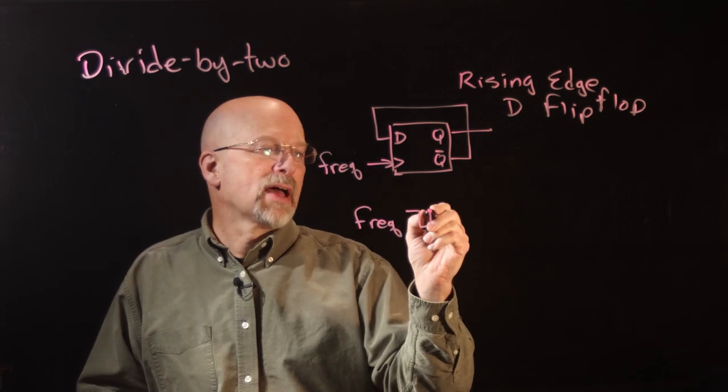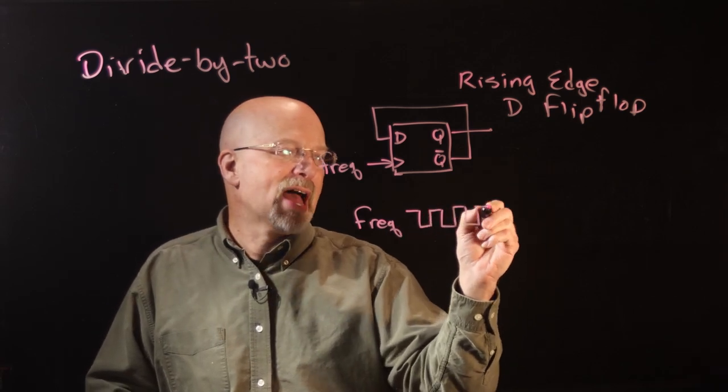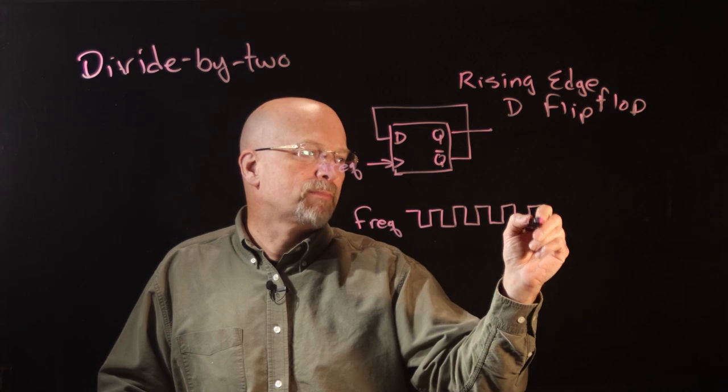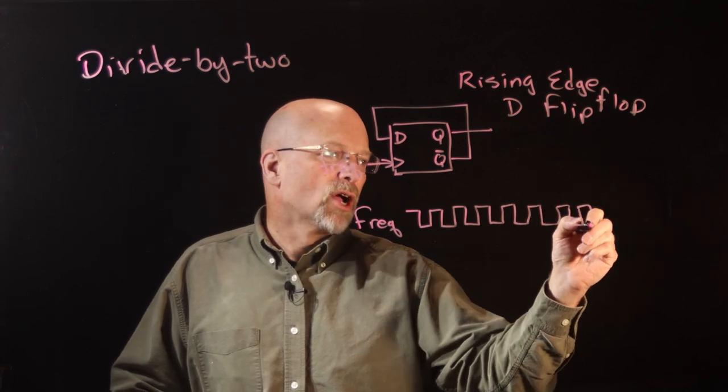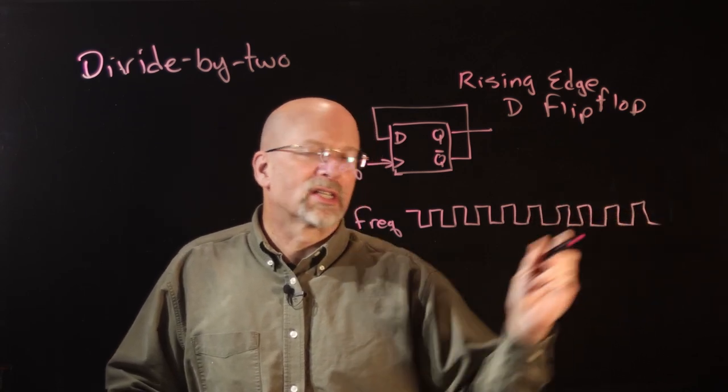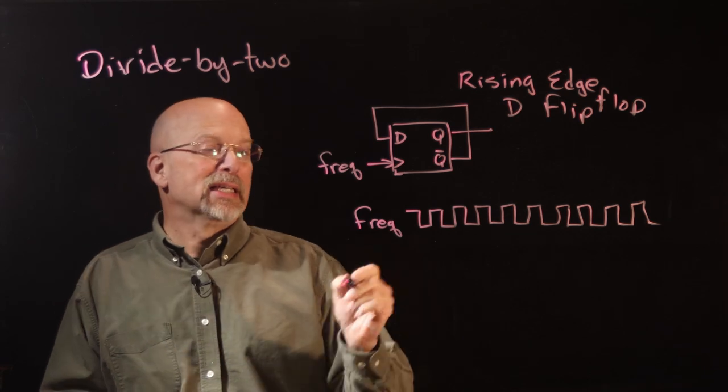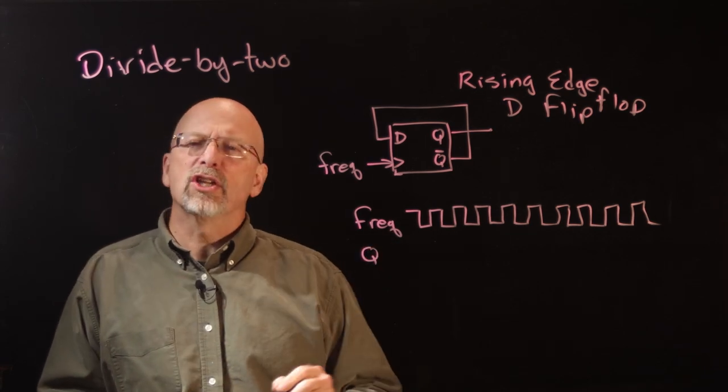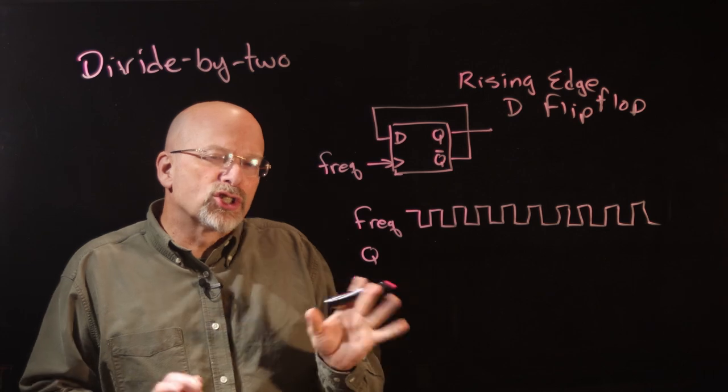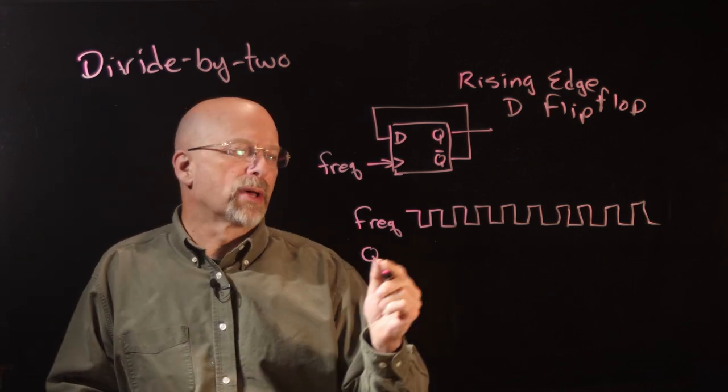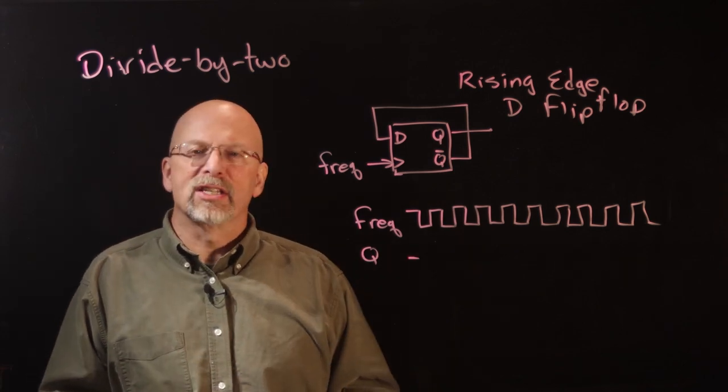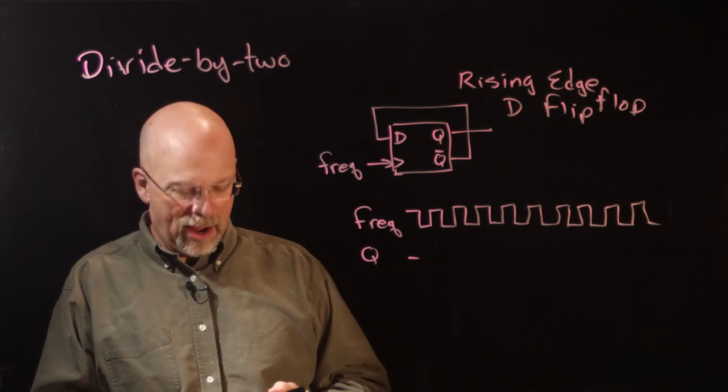The frequency, we're just going to have some sort of very fast set of pulses that are going in to this clock. Now, the idea is, what is on Q? Let's go ahead and start out with an initial value just at some point in time. Let's just say that it's a zero, a logic zero.